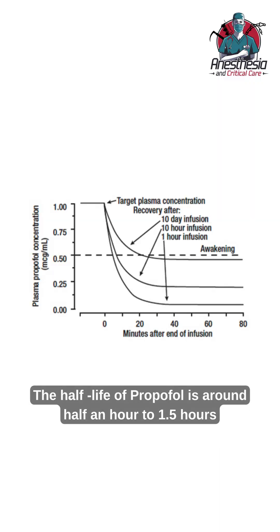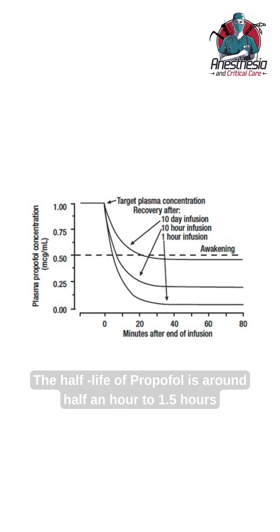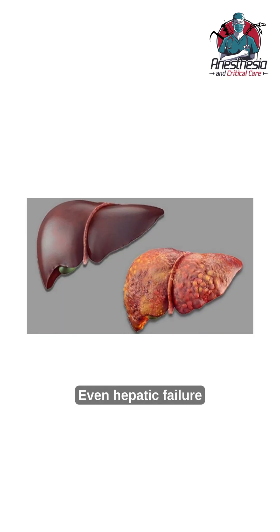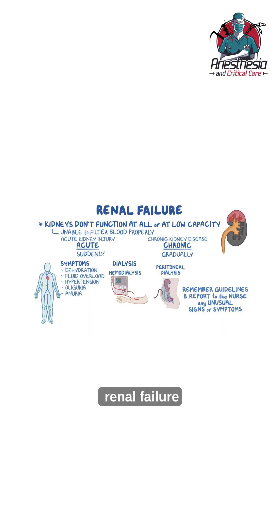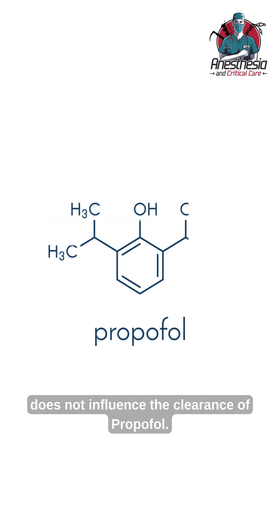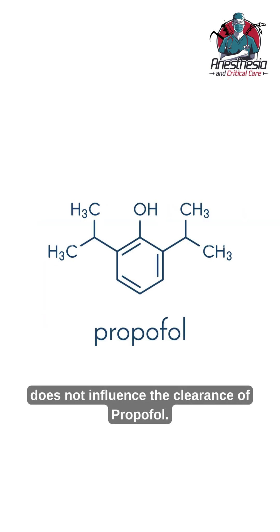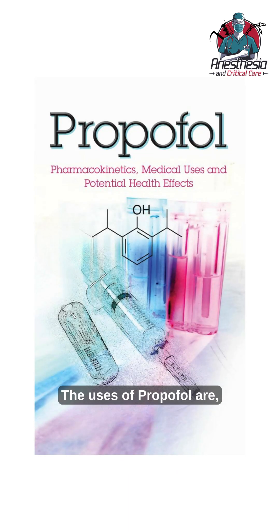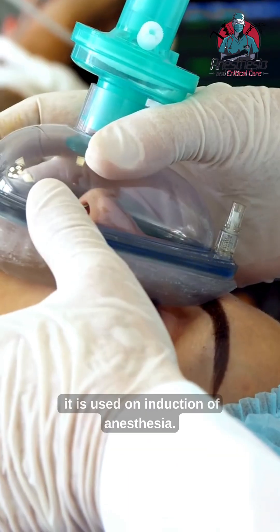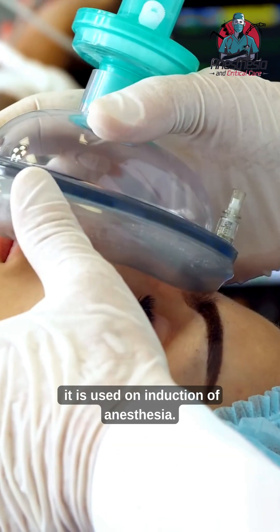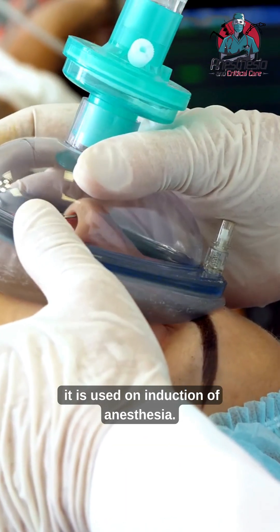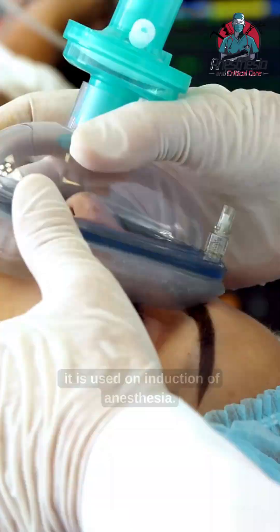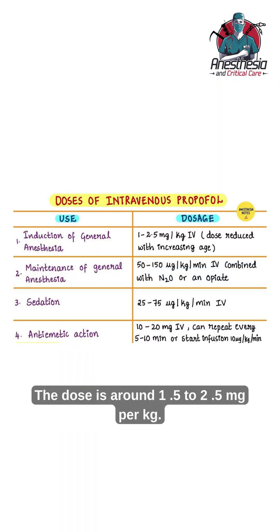Regarding pharmacokinetics, clearance is by hepatic oxidative metabolism, which results in inactive substances that are excreted by the kidneys. The half-life of propofol is around 30 minutes to 1.5 hours. Even hepatic failure or renal failure does not influence the clearance of propofol.